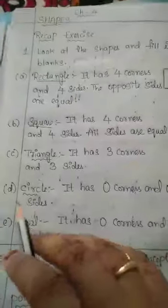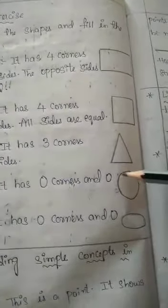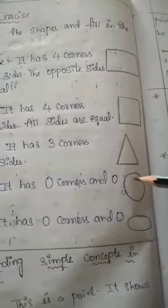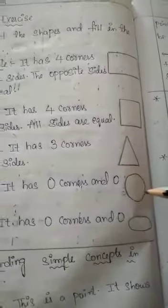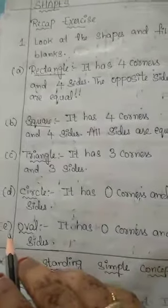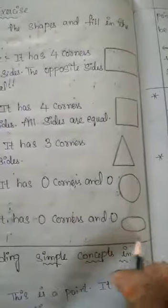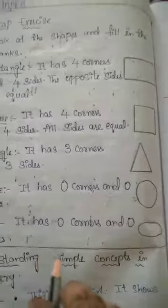D is circle. It has 0 corners and 0 sides. So this is circle — it has 0 corners and 0 sides.